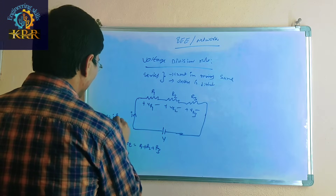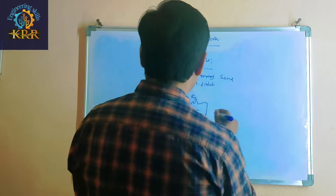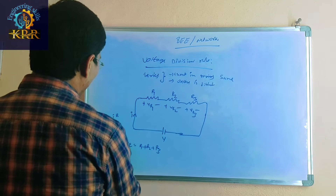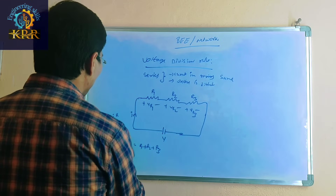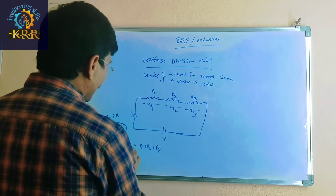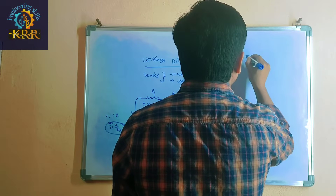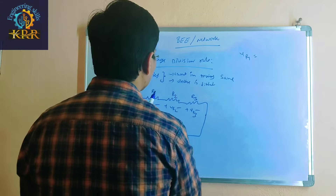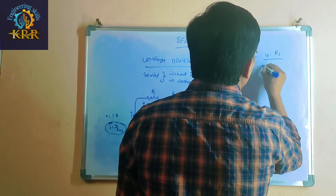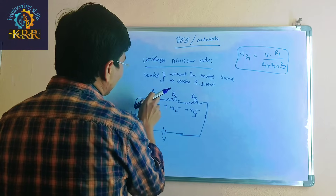The total current is equal to V divided by R_equivalent. If the total voltage V is given and R_equivalent is calculated, you can find the current. Then, to find the individual voltage, voltage at R1 is equal to the total voltage V multiplied by R1, divided by R1 plus R2 plus R3.